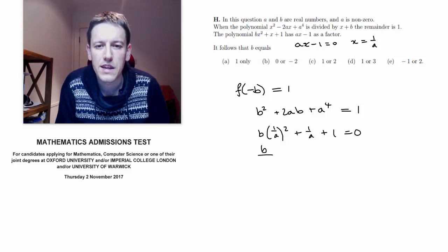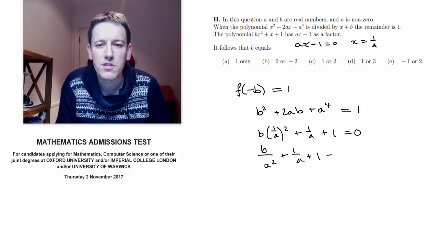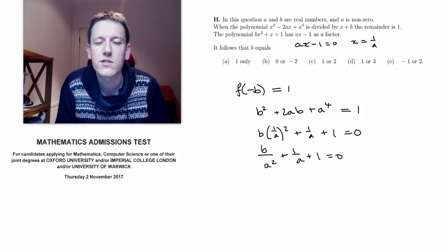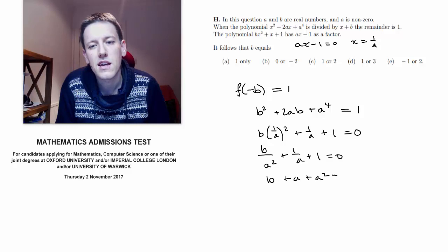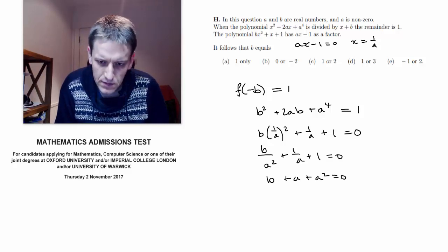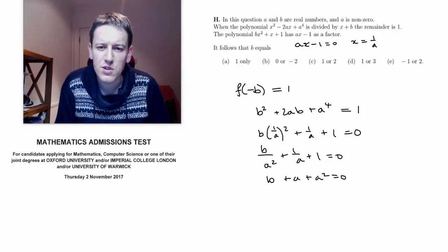So here I've got b over a squared plus 1 over a plus 1 is 0, multiplying through by a squared, I get b plus a plus a squared equals 0.